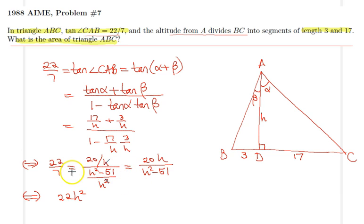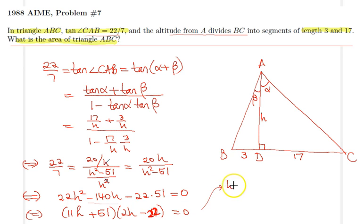We have 22H squared minus 140H minus 22 times 51 equals 0. We can factorize, so we don't have to use the quadratic formula. The only positive solution is H equals 11.